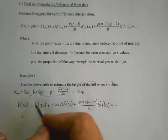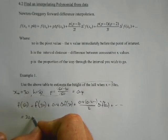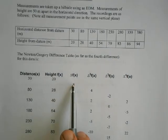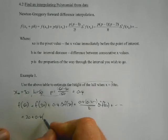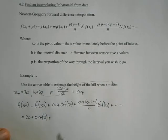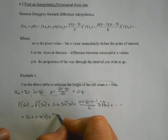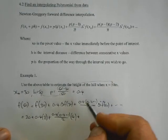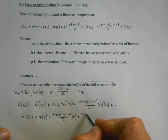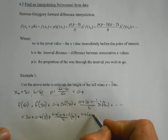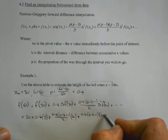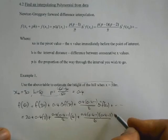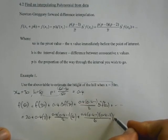So our actual function value is 20, plus 0.4 lots of the first difference, well the first difference was 8, plus this term here is 0.4 times 0.4 minus 1 over 2, times the second difference, which is 4, plus the next term, which is 0.4 times 0.4 minus 1 times 0.4 minus 2, on 3 factorial, which is 6, times the third difference, which was negative 2.